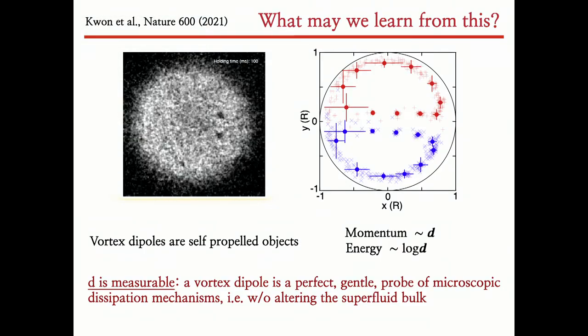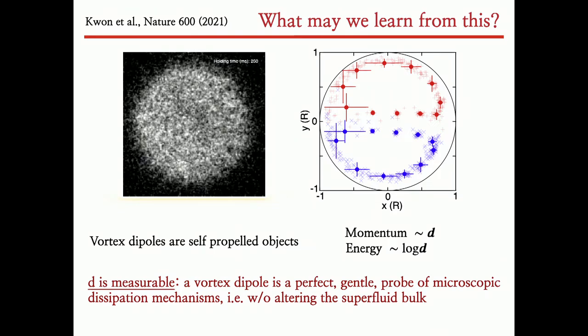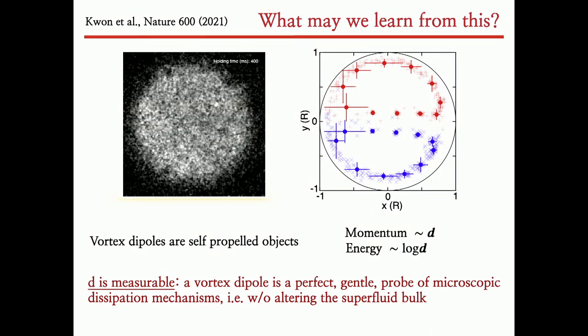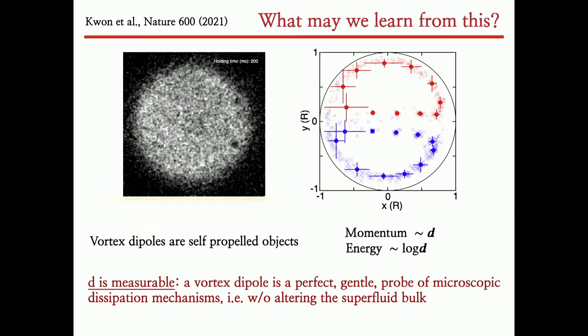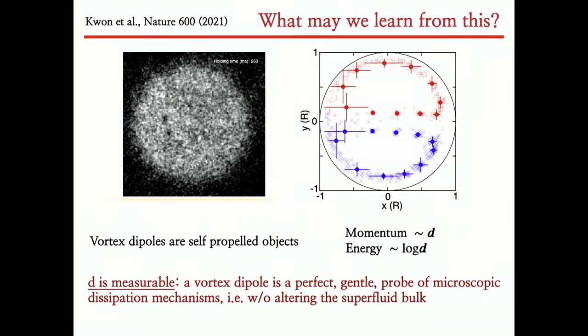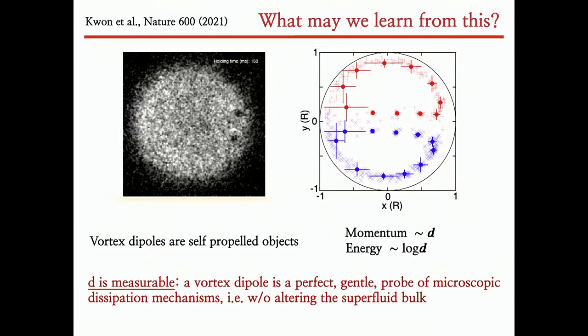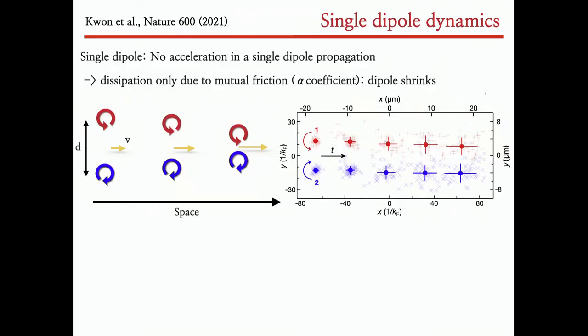Vortex dipoles are really self-propelled objects. The momentum is proportional to the size of the dipole, and energy is proportional to the log of the dipole size, and this dipole size is very nicely measurable. This means that if I measure d, in some sense I have access to quantities related to the dipole itself. I would say this is really a perfect gentle probe of microscopic dissipation mechanisms without altering or disturbing too much the superfluid bulk. I think this is very important because I don't want to create a massive or dramatic alteration of the bulk.